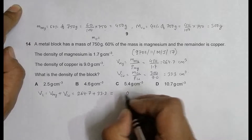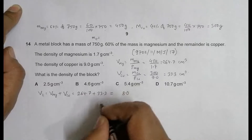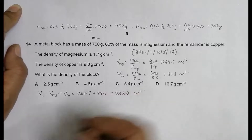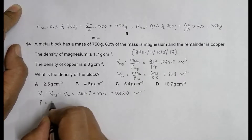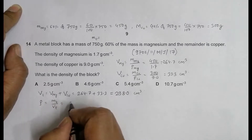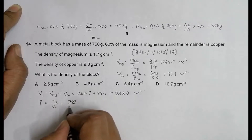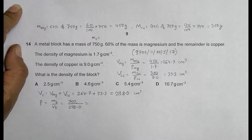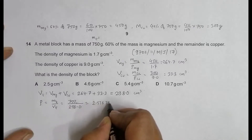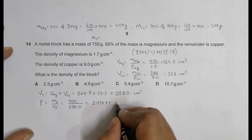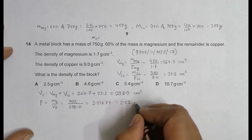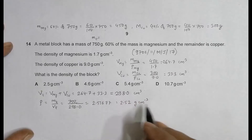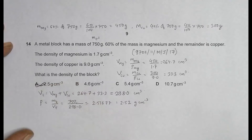The total volume is 264.7 plus 33.3, which equals 298 cm³. The total density is equal to total mass divided by total volume, that's 750 divided by 298.0, which gives 2.5168, so approximately equal to 2.52 g/cm³ to 3 significant figures. The answer closest to this is choice number 8, so choice number 8 is the correct answer.